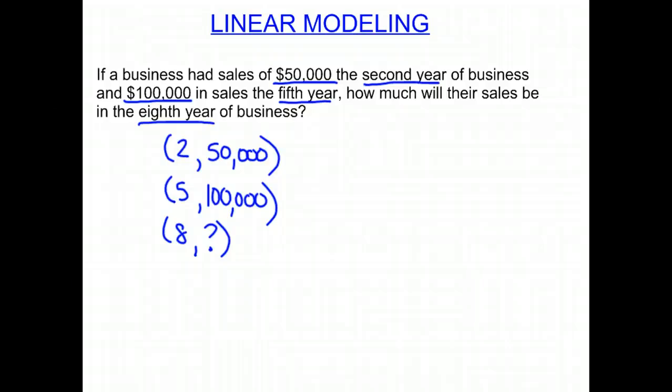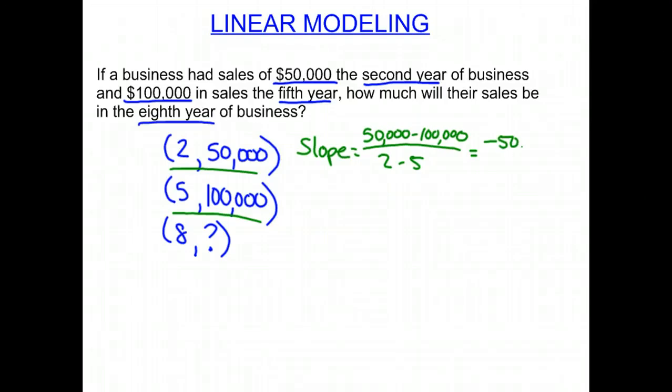Again, we can find our slope by using the first two points. So we do our Y, $50,000 minus $100,000, divided by 2 minus 5, which is negative $50,000, divided by negative 3. Negatives cancel. So our slope is $50,000, divided by 3.